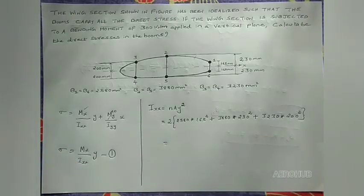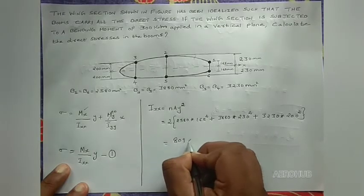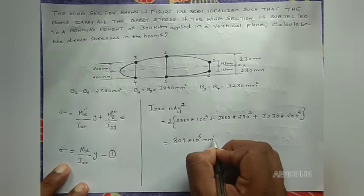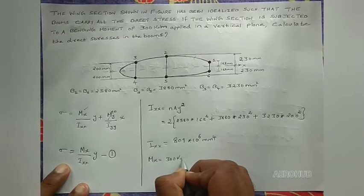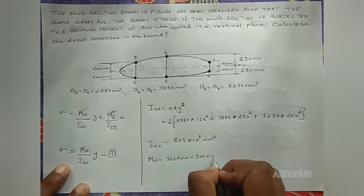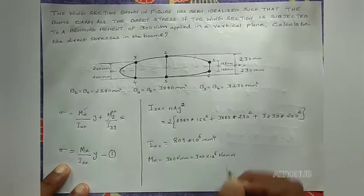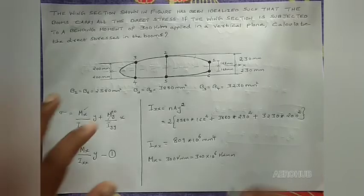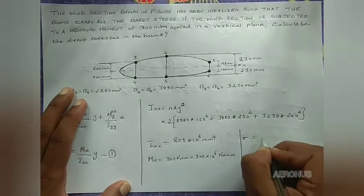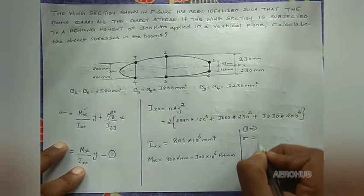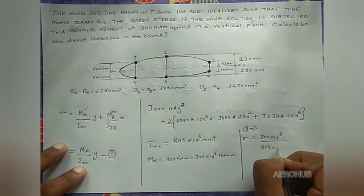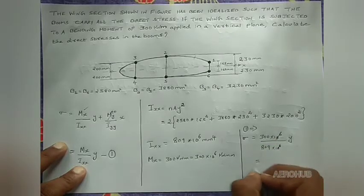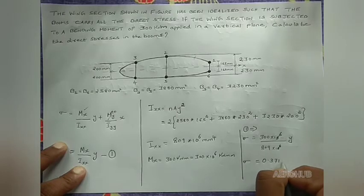When calculated, Ixx equals 809 × 10⁶ mm⁴. With Mx equals 300 kilo-newton-meter, which is 300 × 10⁶ N·mm, the bending stress equation becomes: sigma equals (300 × 10⁶) divided by (809 × 10⁶) times y, giving sigma equals 0.371 × y.